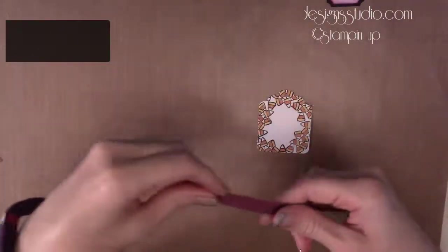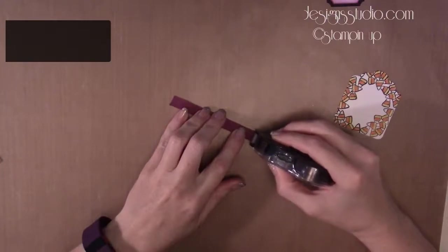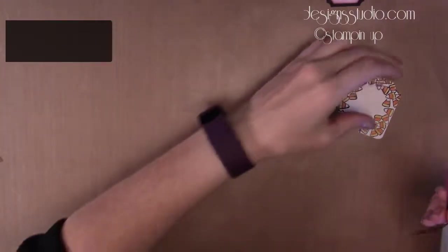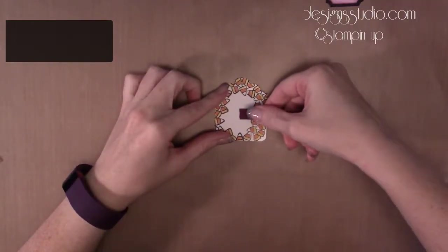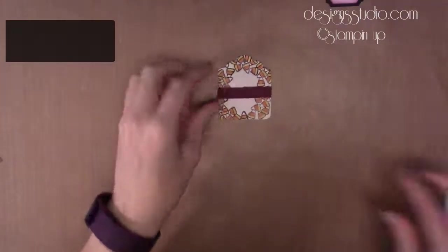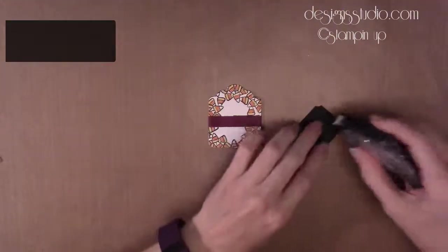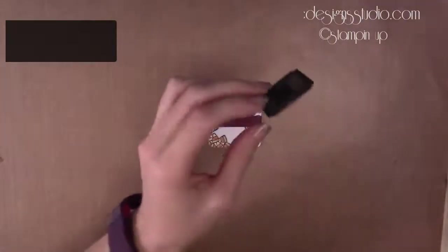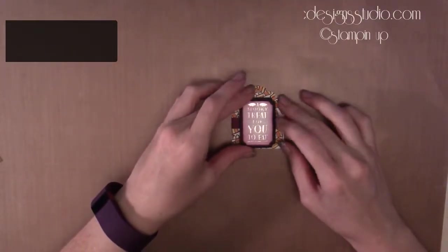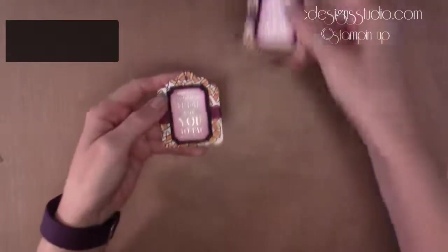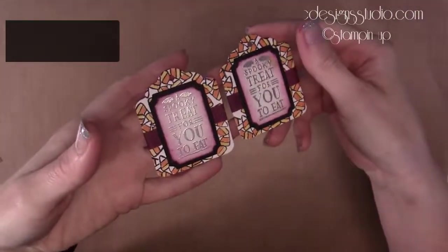Next let's take our Rich Razzleberry ribbon and our snail adhesive. I'm just going to put some snail adhesive on either end of this. Our label's going to go on the front so that's where I'm going to have the ends meet up because you don't want to see the raw ends on the back of the card. Of course if you're gluing it down to something it doesn't really matter. I'm going to take some more snail adhesive on the back of our label and because it's going over ribbon I'm being very generous with how much snail that I'm putting on. Just kind of center that up, pop it on and there we have our candy corn tags.